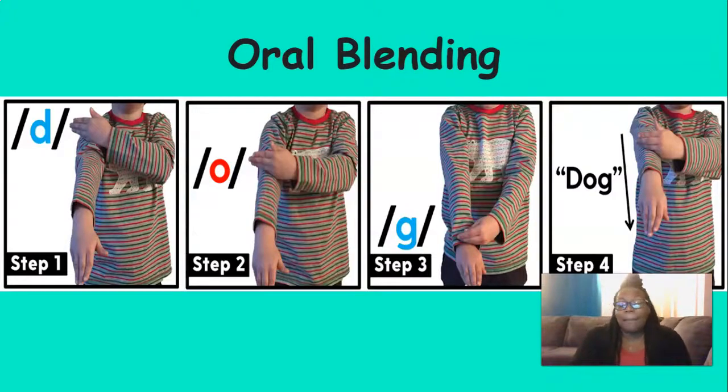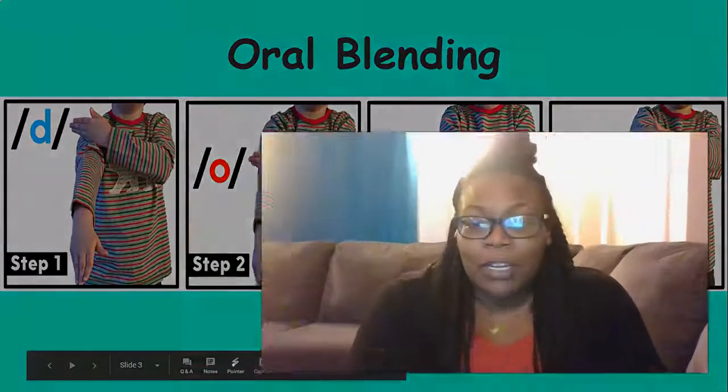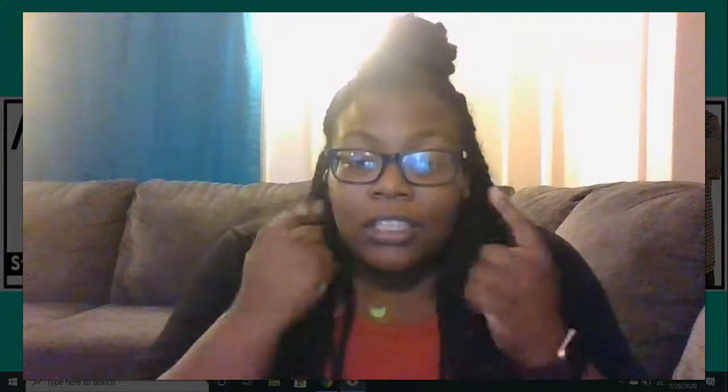So we're going to start today by blending. We have to listen carefully to the words that I say and figure out what they all have in common. You ready? The first word has three sounds and it's sheep. Sh-e-p. Sheep. Good.